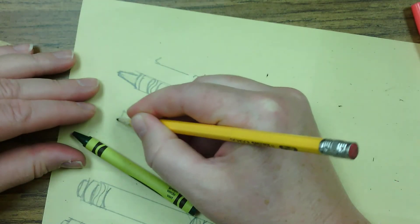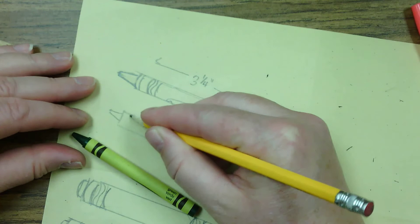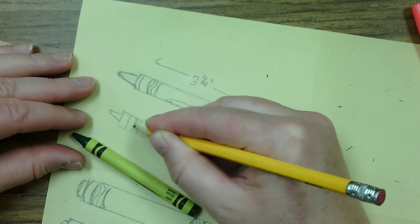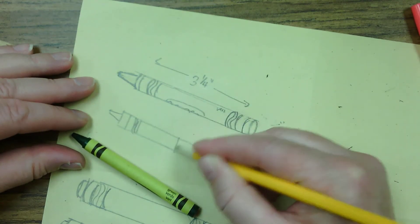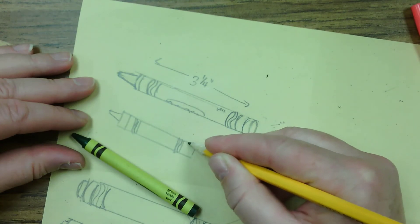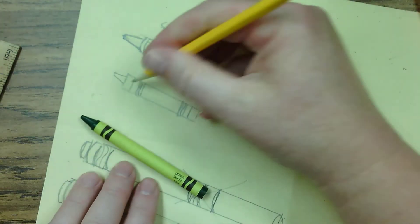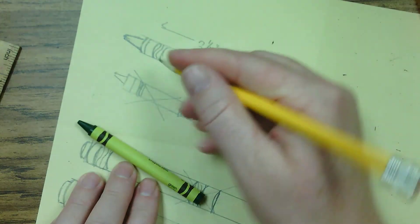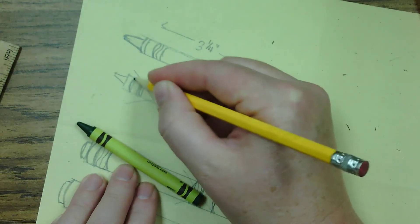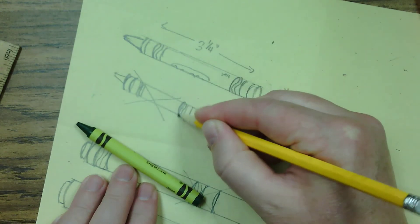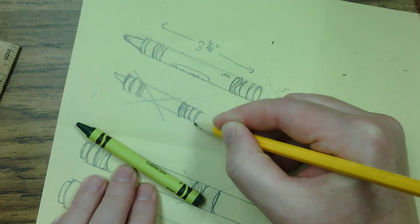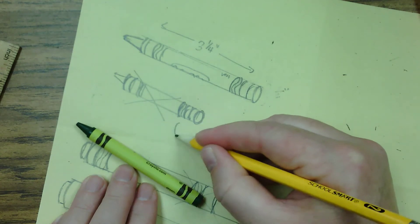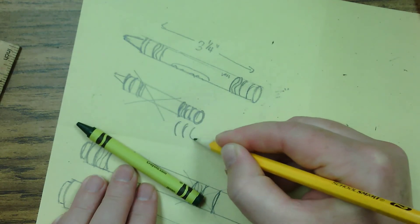So here I'm going to show you what not to do. If you draw your crayon with straight lines instead of curved lines, your crayon is not going to look 3D. It's going to look flat, like a piece of paper. So if your lines are straight like this, erase them and make them curved. Straight lines are not good for that part of the crayon, if that makes sense.